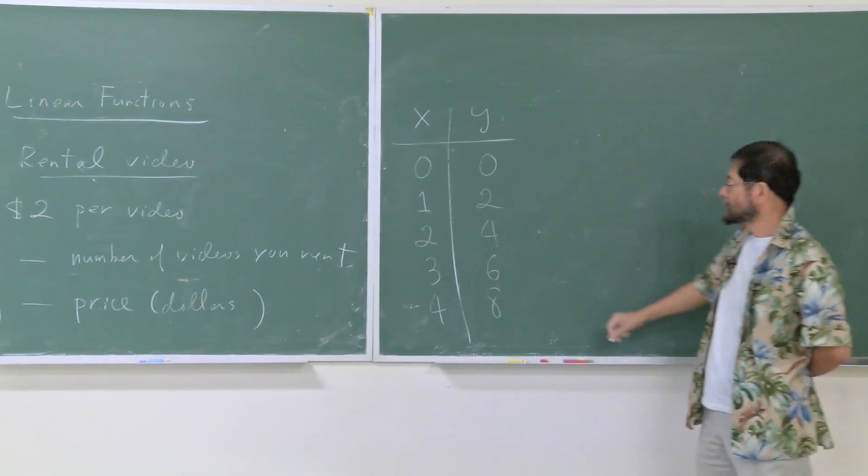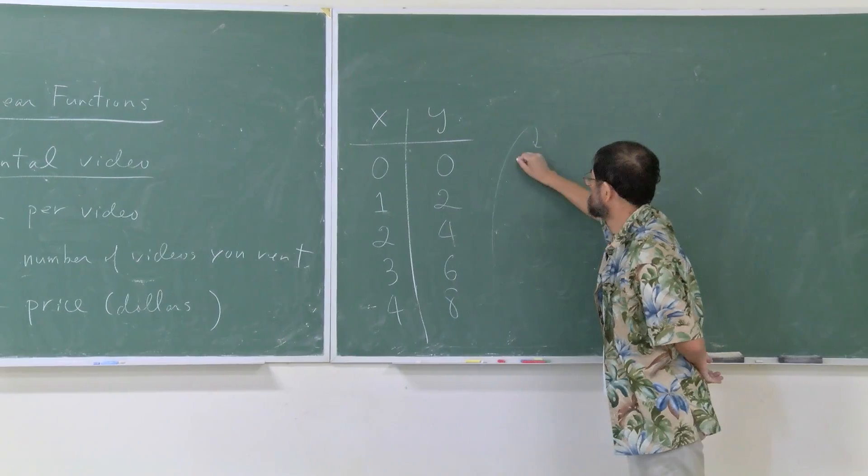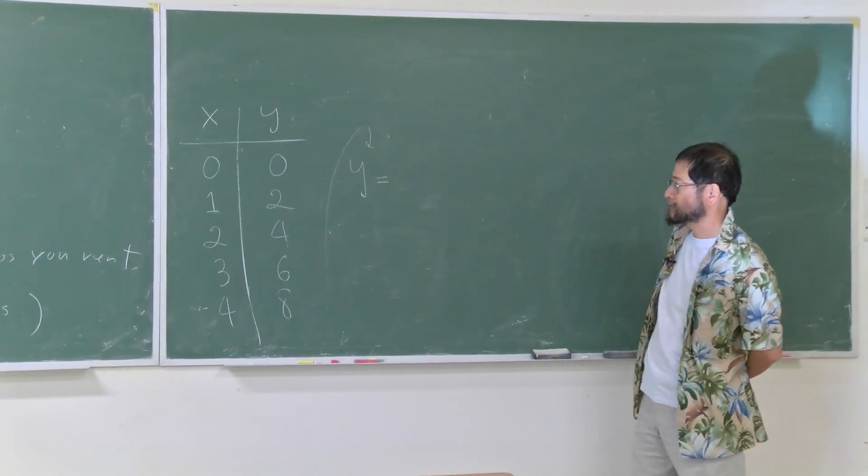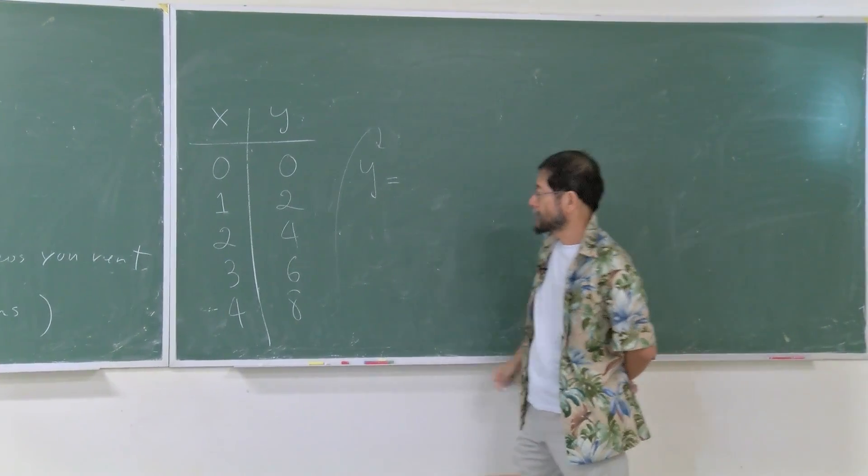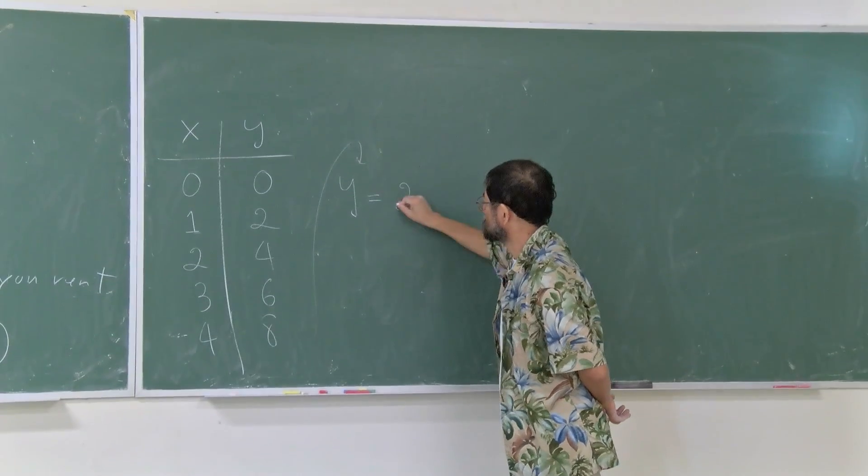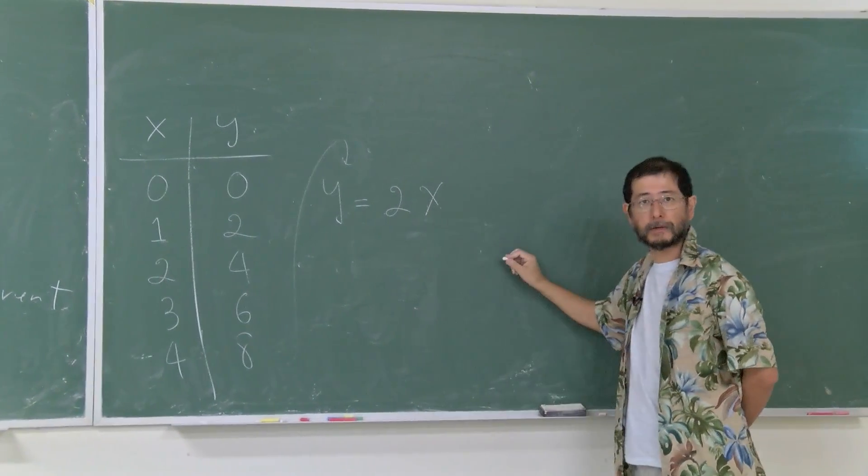From this, can you get the formula for this function? What's the correspondence? If you look at this, y is obtained by 2 times x. This is the formula.